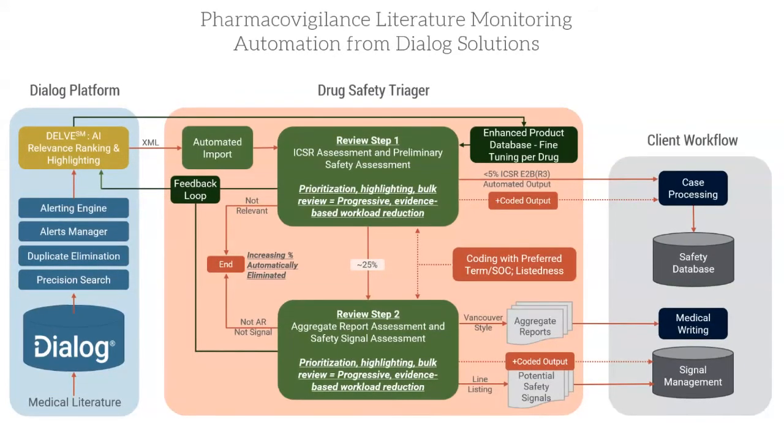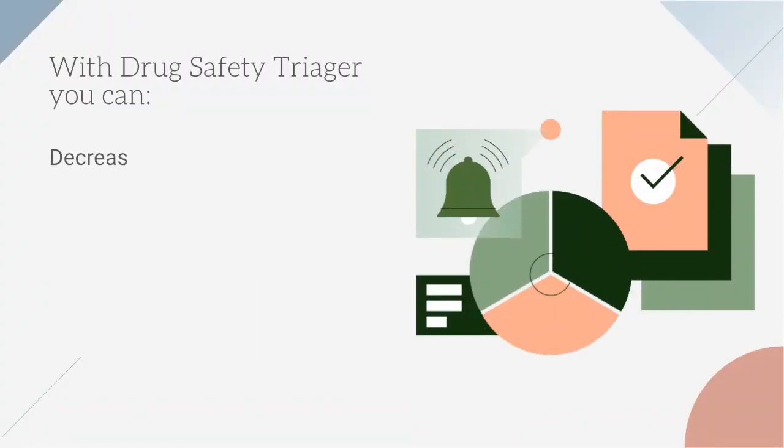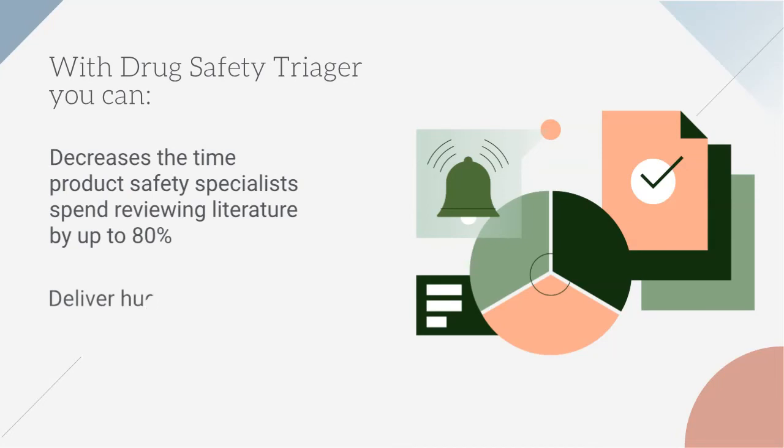Overall, this reduces the amount of time the product safety specialists spend reviewing literature by up to 80%. And, as each assessment for aggregate reports and safety signals costs at least four to five times that for ICSR, this delivers huge efficiencies and savings.